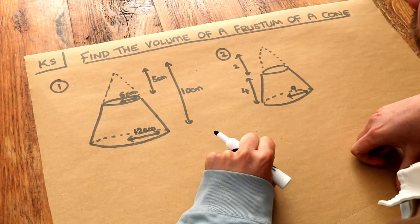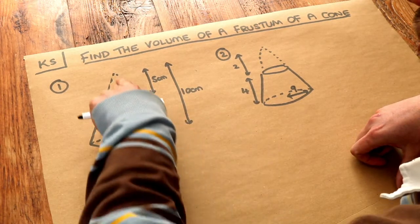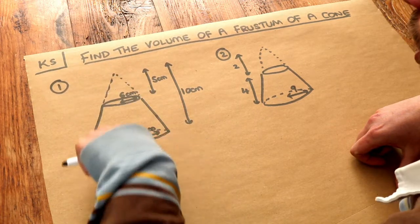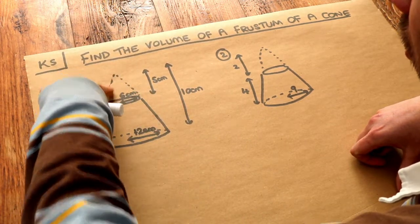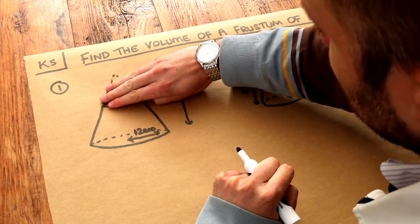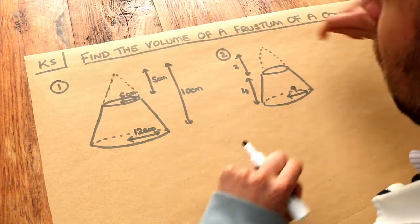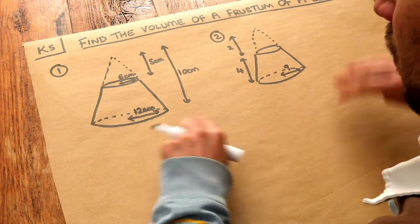And the strategy for finding the volume of a frustum of a cone is to start with the volume of the whole cone, including this imaginary bit at the top, and then just chopping off and subtracting the volume of the cone at the top. So let's do that with this first example.